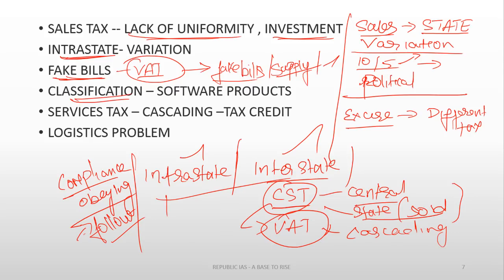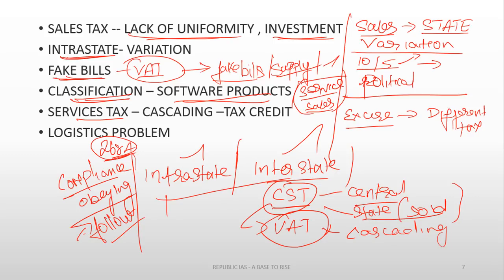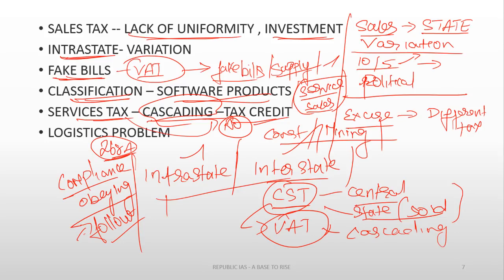Product classification was also a hectic task. For instance, software products created a dilemma — should service tax or sales tax apply? There was confusion about classifying certain products. Added to that, the service tax introduced by the 88th Amendment Act in 1995 under Article 268A did not have an input tax credit system. So in sectors like real estate, oil and gas, construction, agriculture, and mining — because the input tax credit system was not available for services — price rise was higher and a cascading effect existed for the service sector.